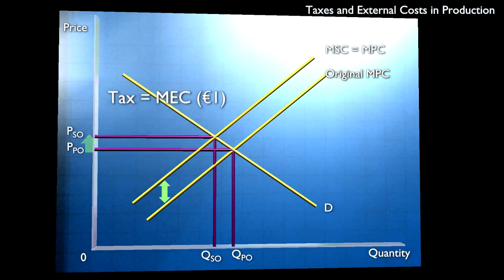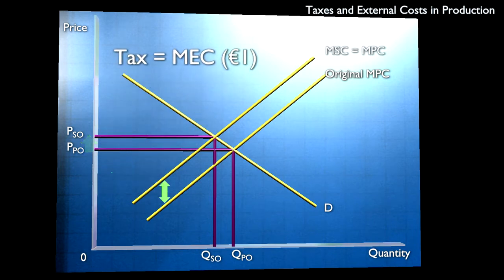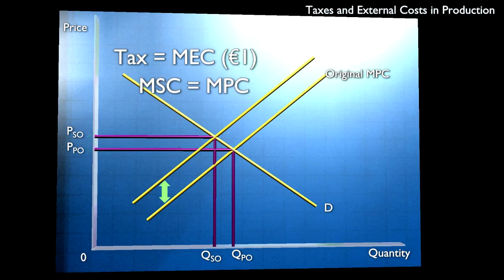The reduction in output raises the price from PPO to PSO. The principle is that the tax should equal the size of the external cost. By doing so, we've restored the identity between the private and social cost, and the market is once more effective.